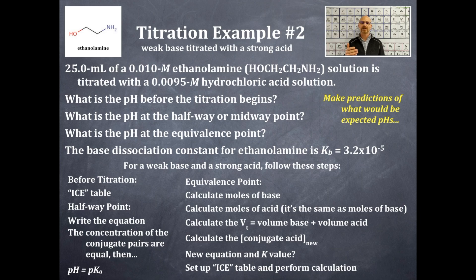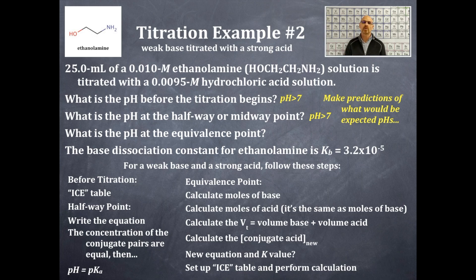The pH before titration — we have a weak base and no acid added — so the pH is going to be greater than 7. At the halfway or midway point, that is within the buffer region, so that pH is also going to be greater than 7. At the equivalence point or end point, we have added an equal number of moles of acid as there were moles of base. Since the strong acid overwhelms the base, the pH is going to be less than 7. This will not be a pH of 7 — a pH of 7 at the equivalence point only occurs when a strong acid is titrated with a strong base.